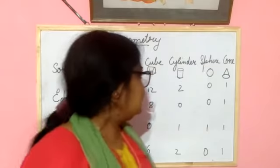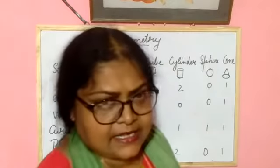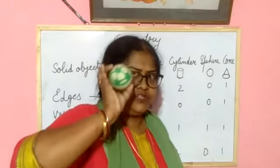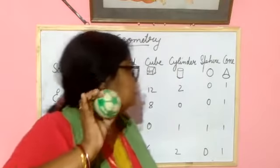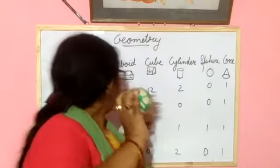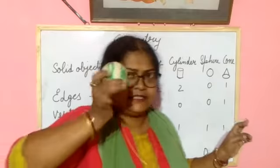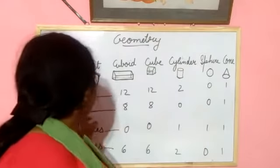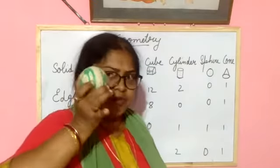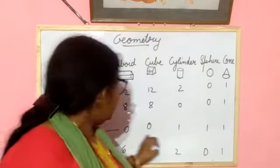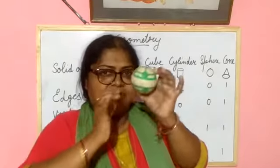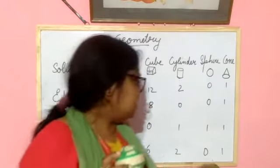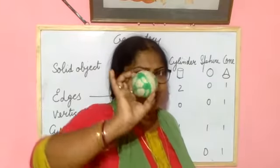Next one is a sphere — this is the ball shape. In a sphere, how many edges? 0 edges, none at all. Vertex? No vertex. Next, curved face: 1 curved face. And plain face: 0 plain faces. No plain face can be seen in this ball.